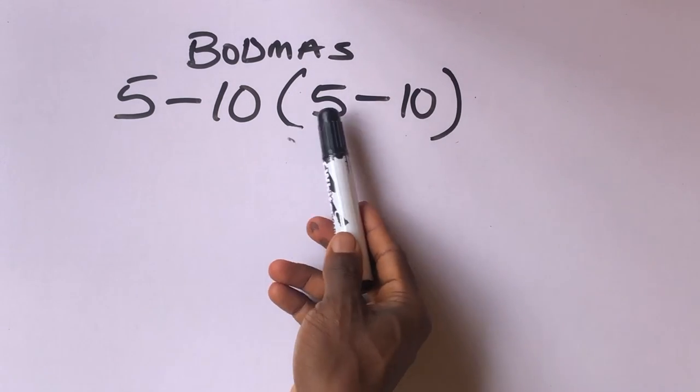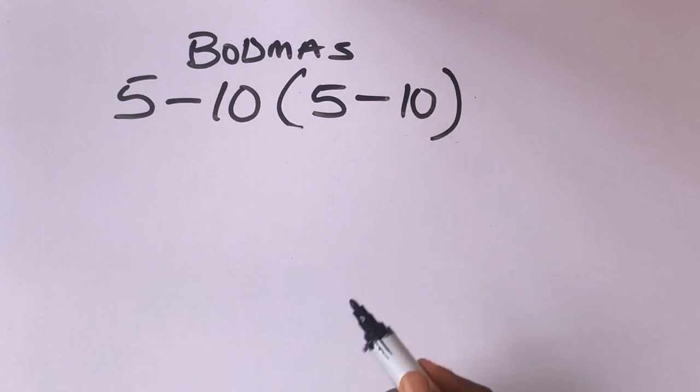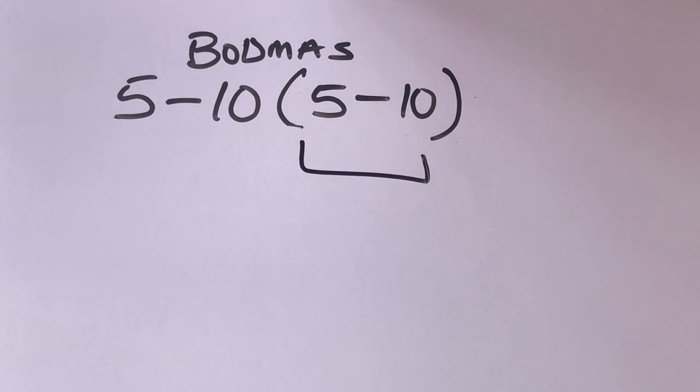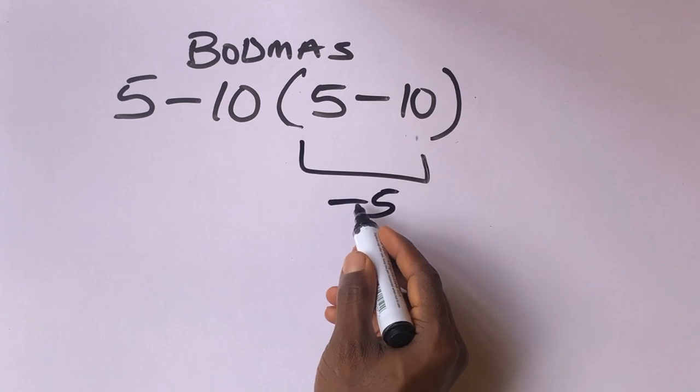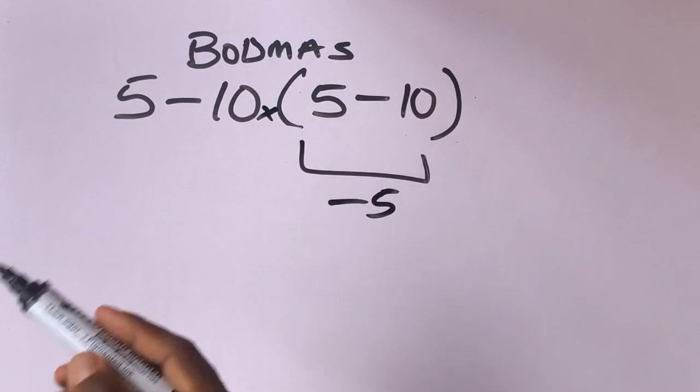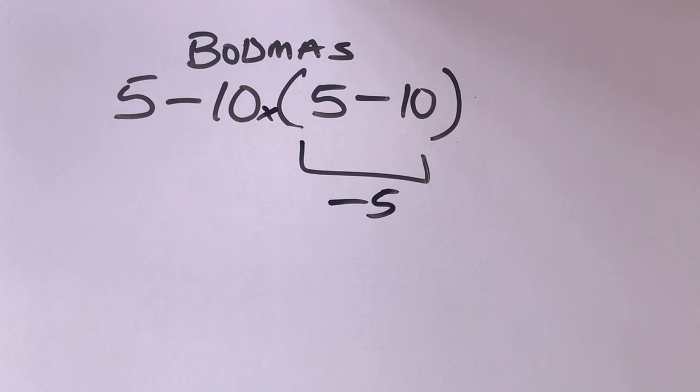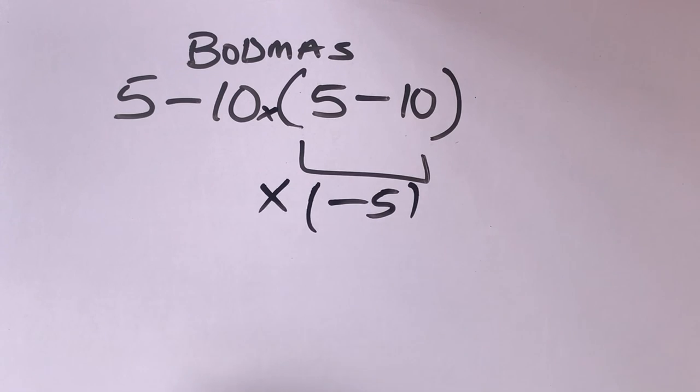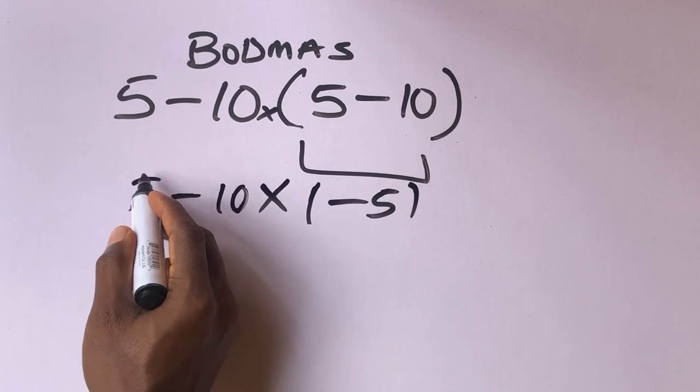So 5 minus 10, which is minus 5 minus 10, will give us minus 5. Remember, there's invisible multiplication here. When the number is close to the parenthesis, it's multiplication. So there's multiplication here. Let's put this in bracket. Then put your 10 here, minus 5.